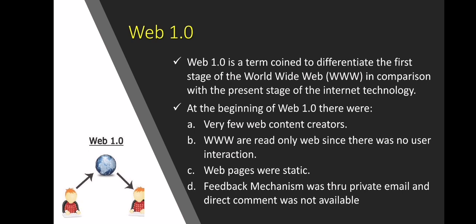Web pages in Web 1.0 were static, meaning none of the content displayed was generated by any code or script. Static pages do not change unless the creator manually modifies the file, and they appear the same to all visitors. Feedback was through private email and direct commenting was not available.